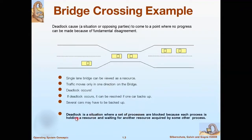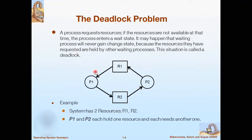So we can say that deadlock is a situation where a set of processes are blocked because each process is holding a resource and waiting for another resource acquired by some other process. Consider another example with a graph. Here we can see two resources R1 and R2 represented in rectangular boxes, and two processes P1 and P2 represented in circles. Resource R1 is allocated to process P1, meaning P1 already has R1 and is requesting R2, where R2 is allocated to P2 and P2 is requesting R1. This state can be called a deadlock.